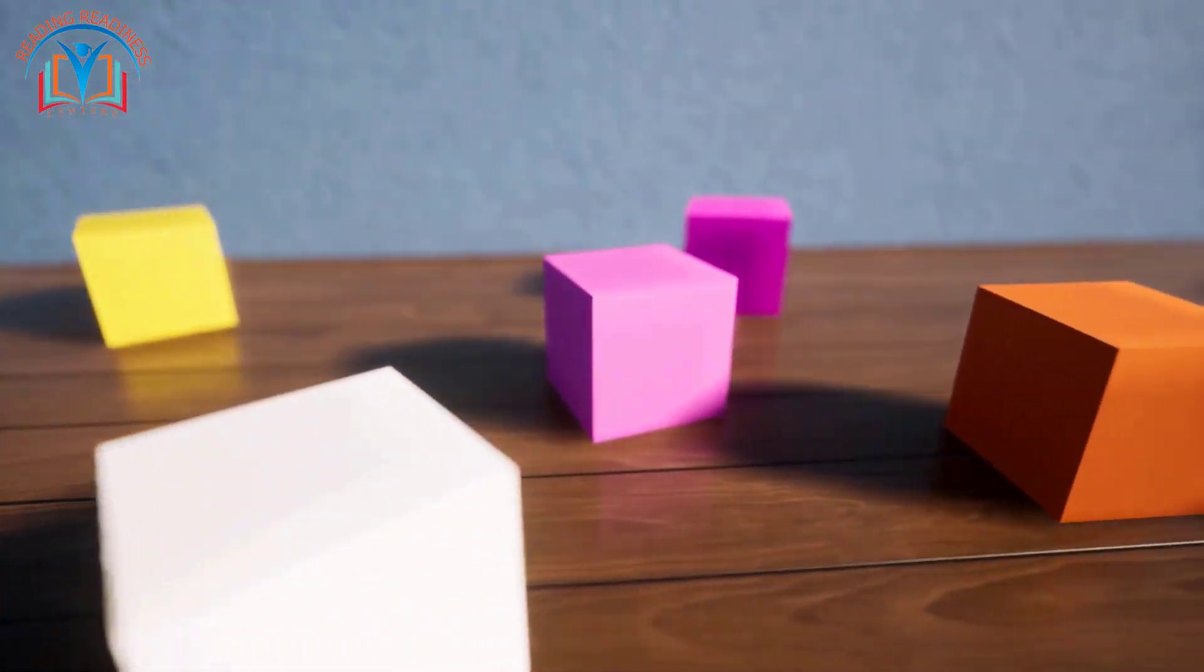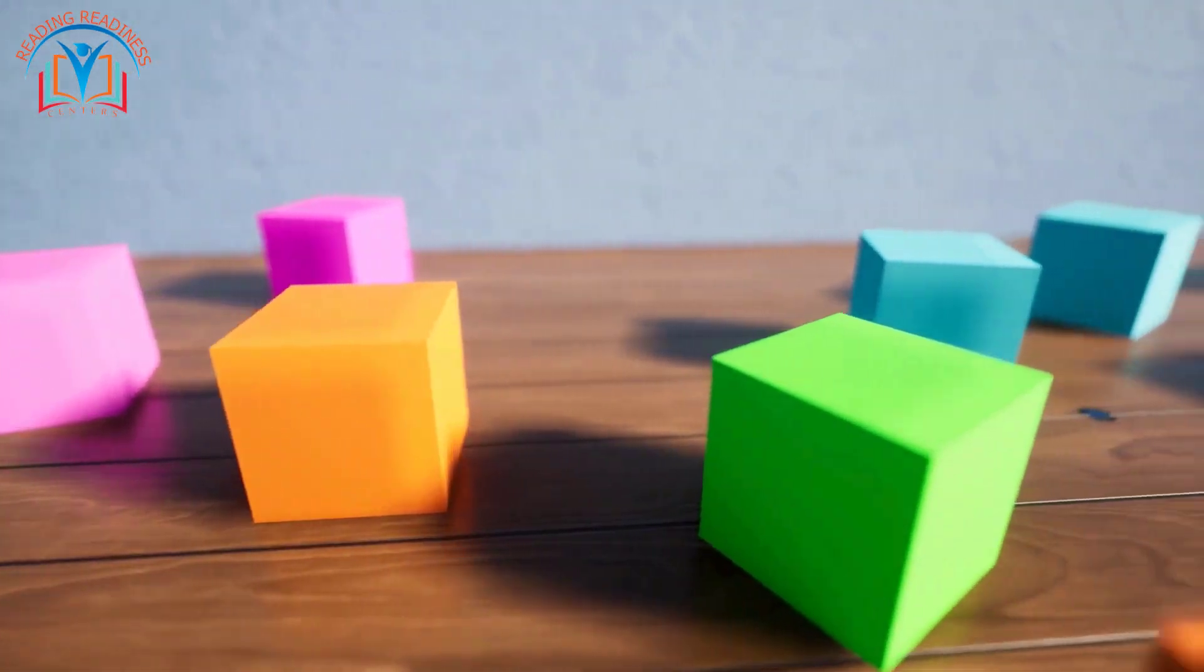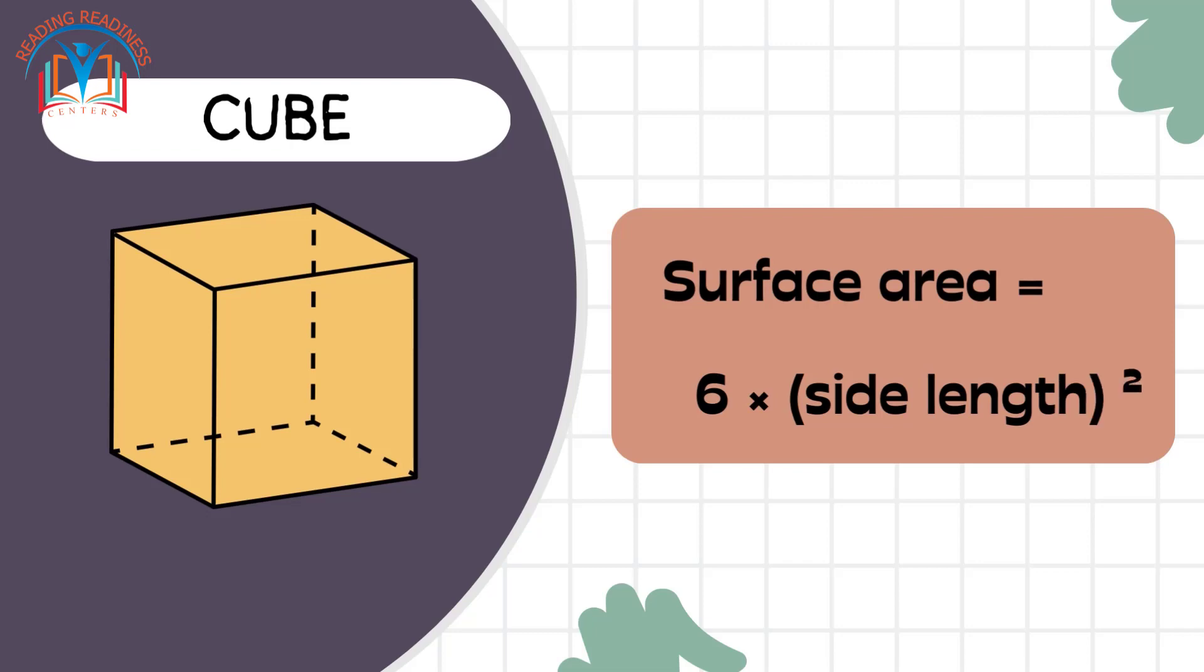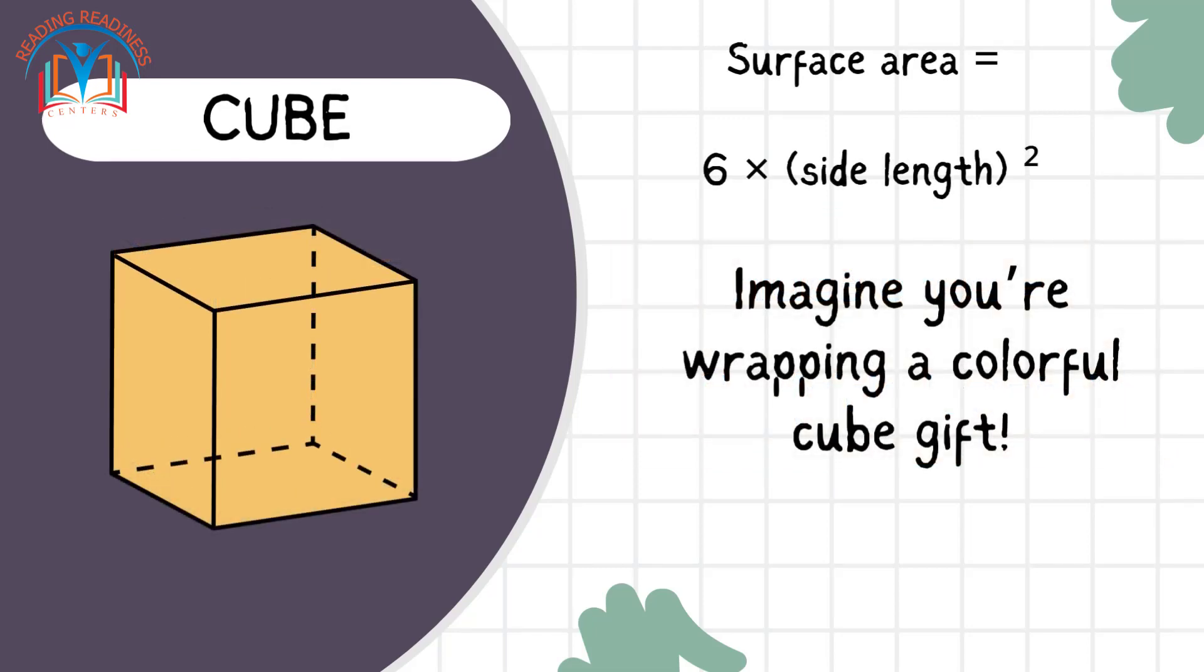Cubes. Each face of a cube is a square. So, surface area equals 6 times side length squared. Imagine you're wrapping a colorful cube gift.